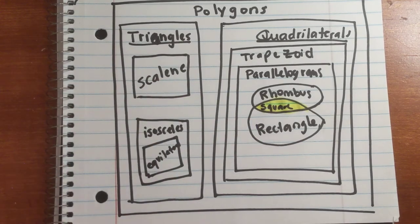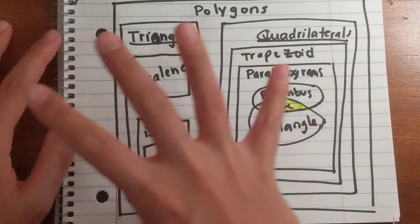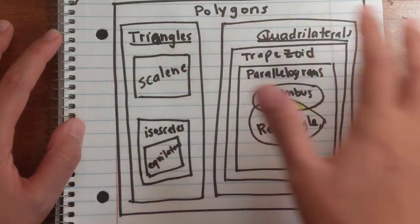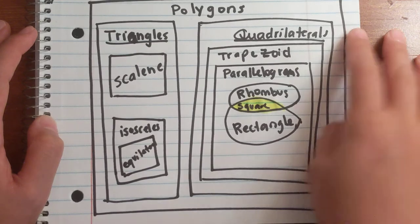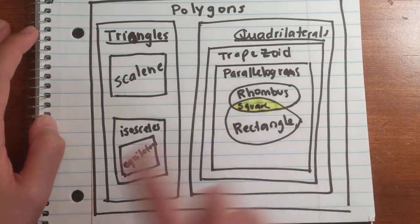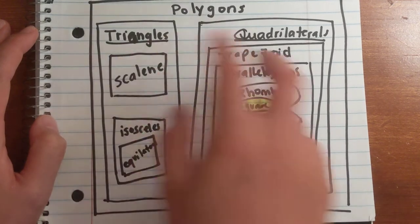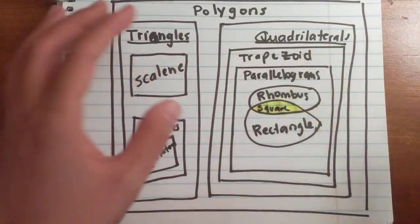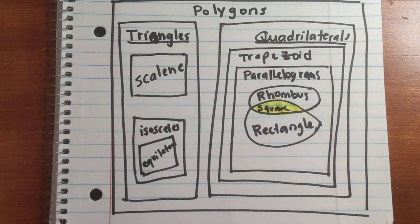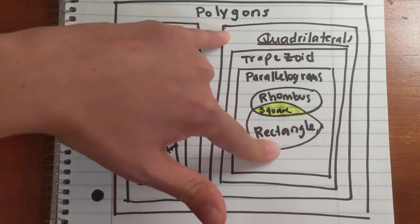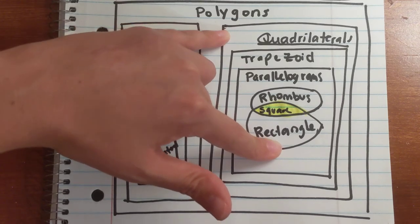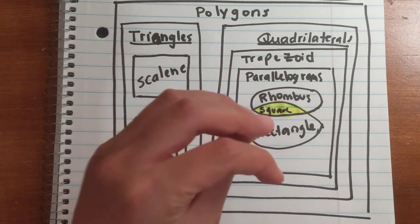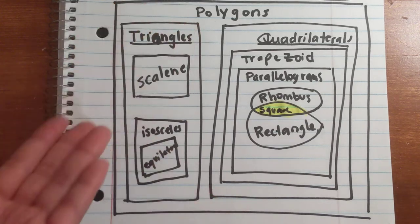Let's review classifying two-dimensional figures. When you classify, think about the most general category — polygons — and get more and more specific. I could have added pentagons, hexagons, heptagons, and more, but in fifth grade we focus on triangles and quadrilaterals, then get more and more specific from there. For practice, ask yourself: is a rectangle a quadrilateral? Always, sometimes, or never? Always — a rectangle is always a quadrilateral. When you reference something from a more specific category to a lesser specific one, the answer is always.